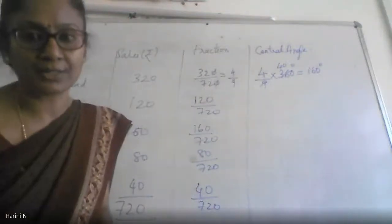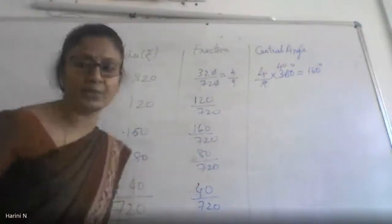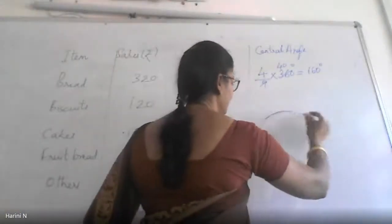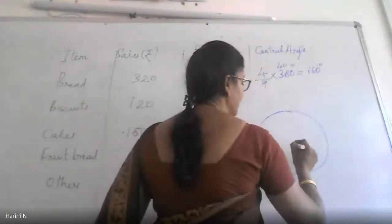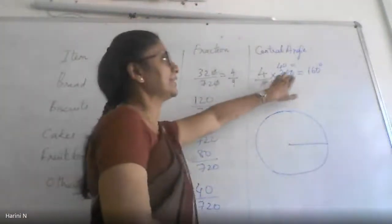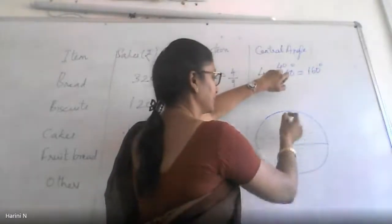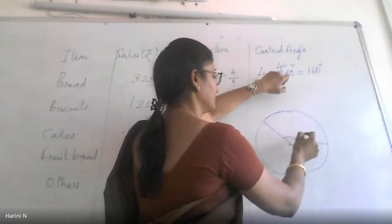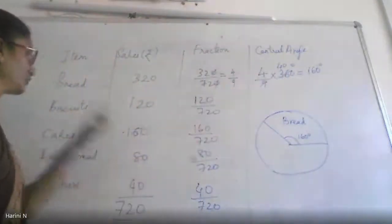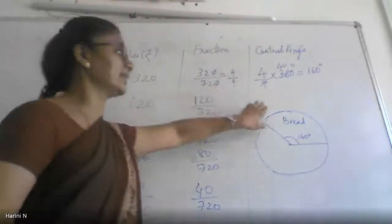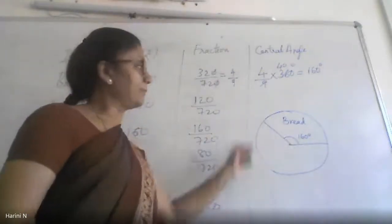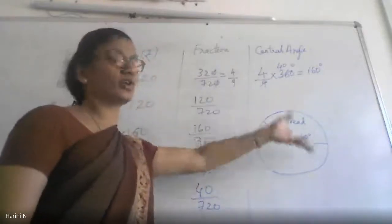You draw a circle neatly using your compass, mark the center, and draw the radius. The first portion — the sales of bread — has a central angle of 160 degrees. You place the protractor and measure 160 degrees. This portion represents the sales of bread. Like this, for each item you find the central angle and continue dividing the circle into smaller sectors.